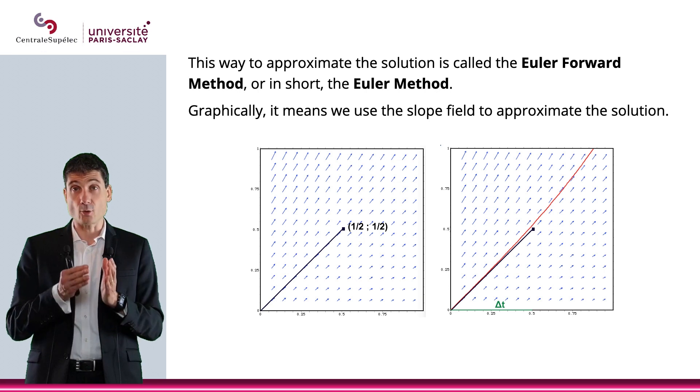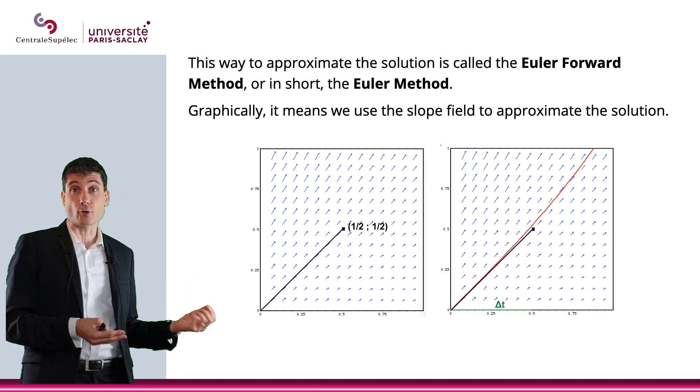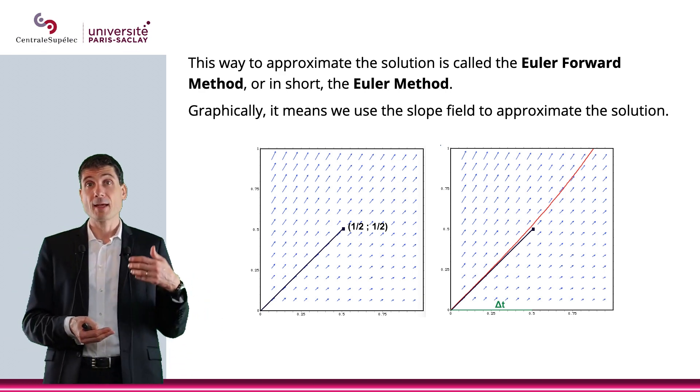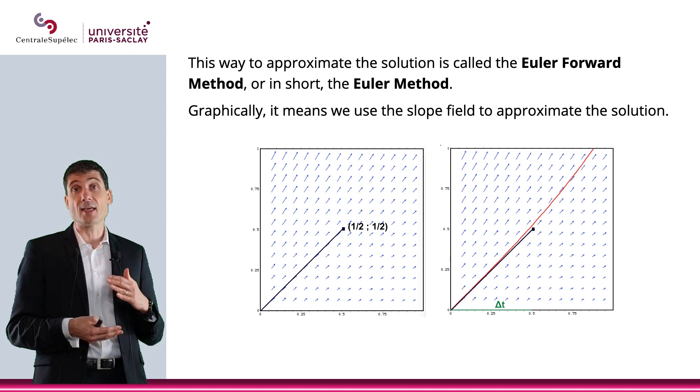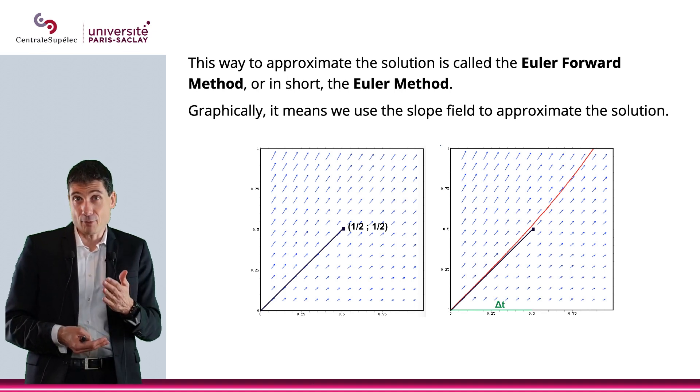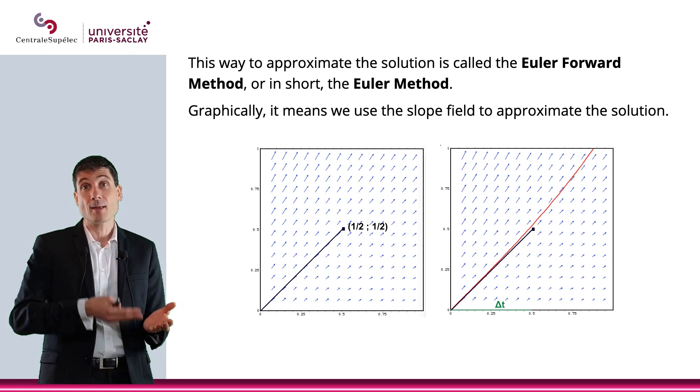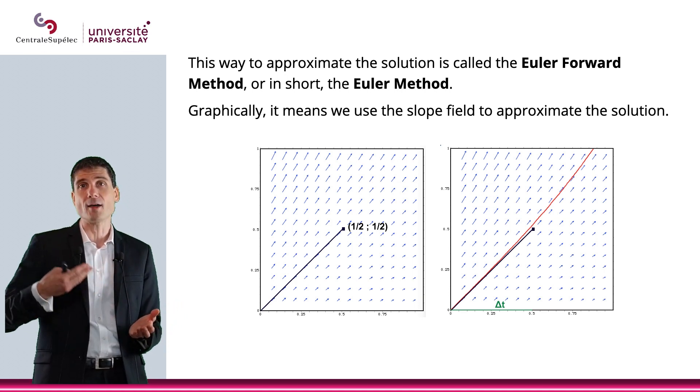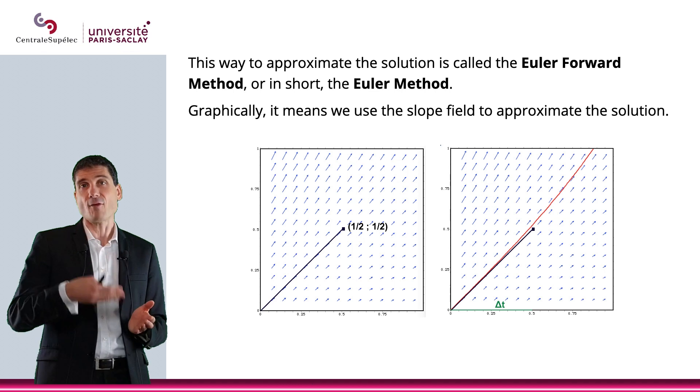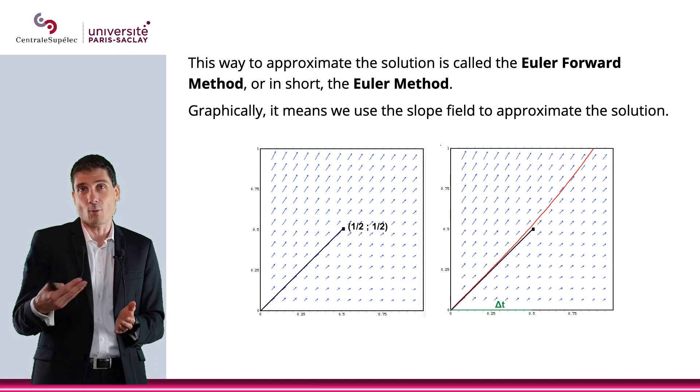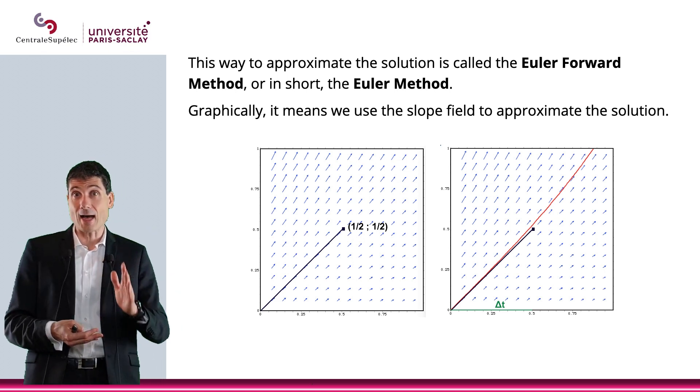Now, I would like to show you what it means graphically. What it means graphically is that you start with Y of T0 equals Y0. So you know that point, you know the value of Y at T0. That's your initial condition. But you also know the slope of the tangent at that point. The reason why you know the slope of the tangent is because you have an ODE. So, you know that Y prime is F of T, Y of T.